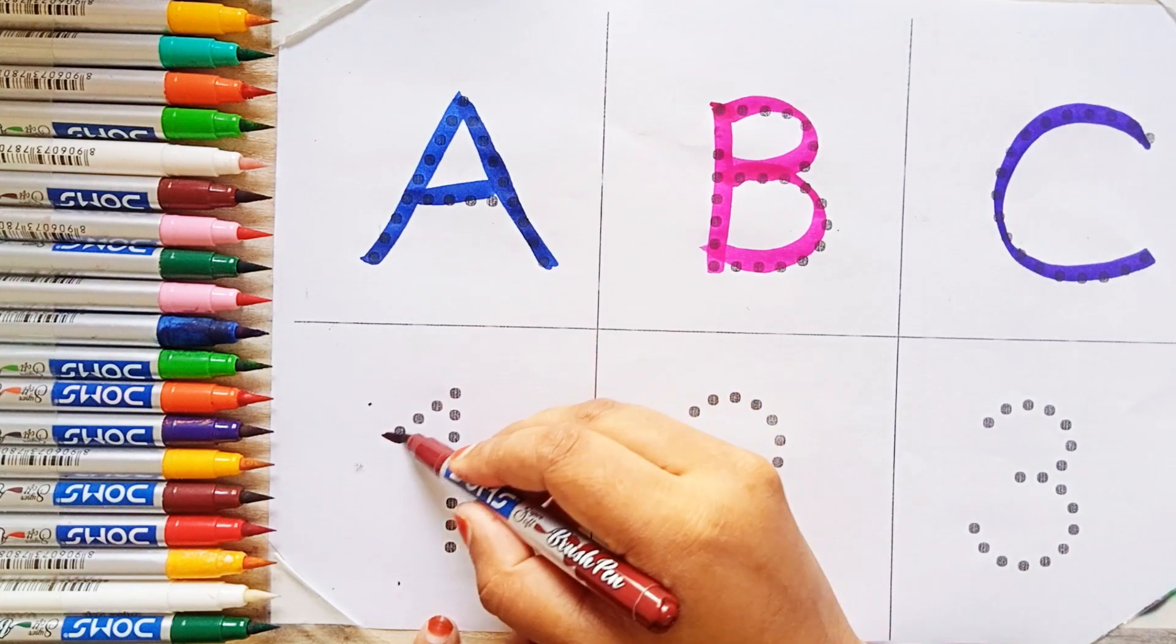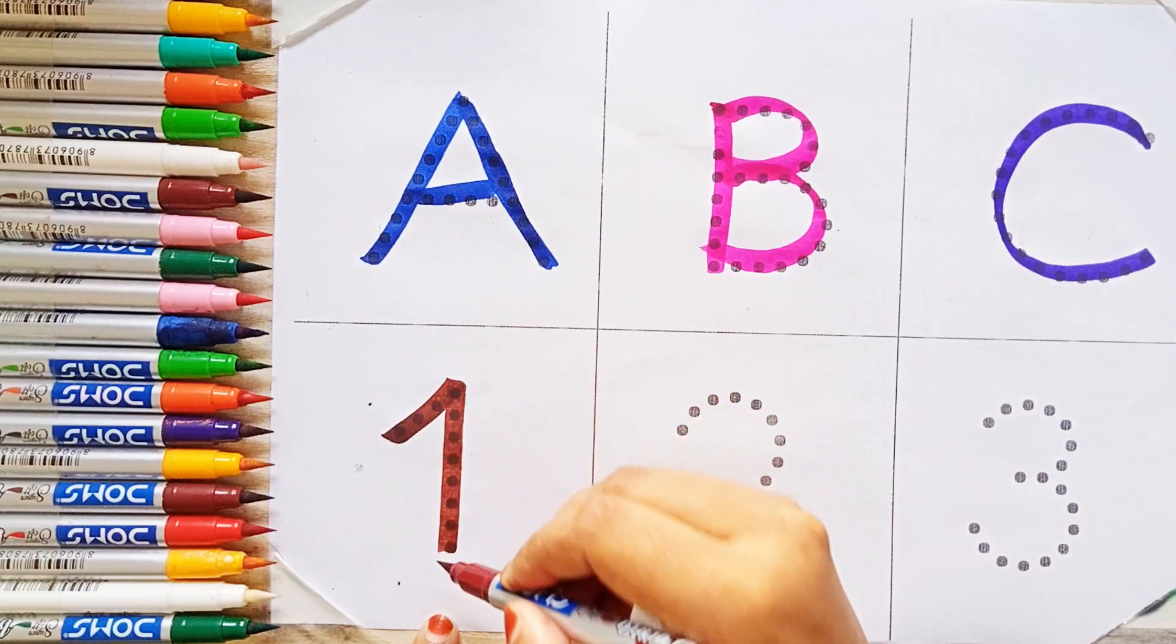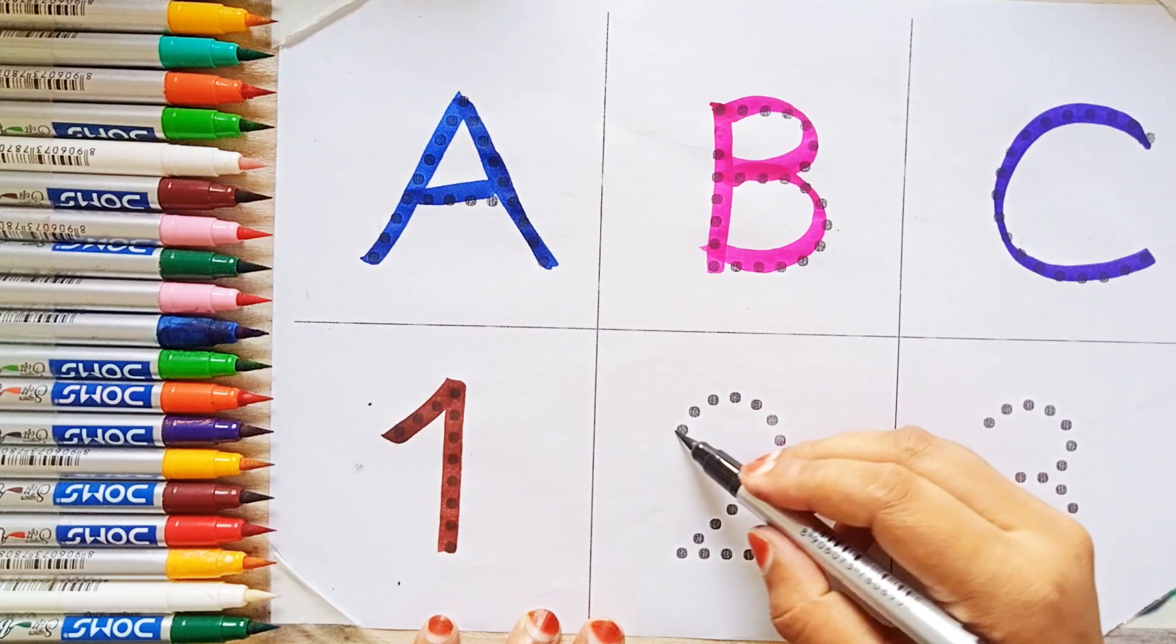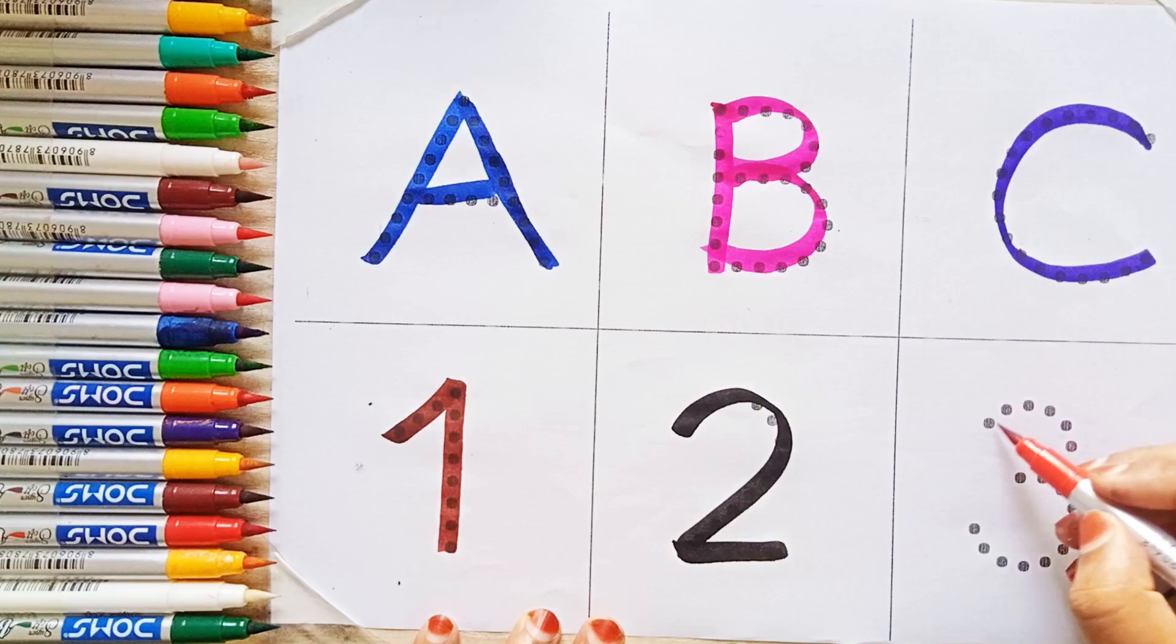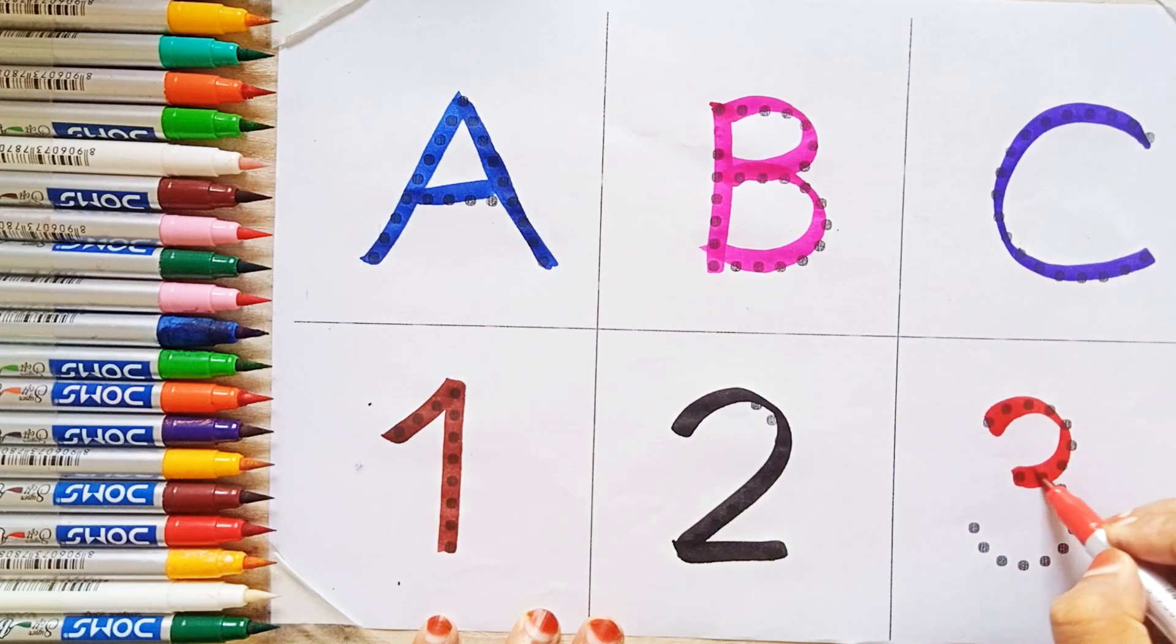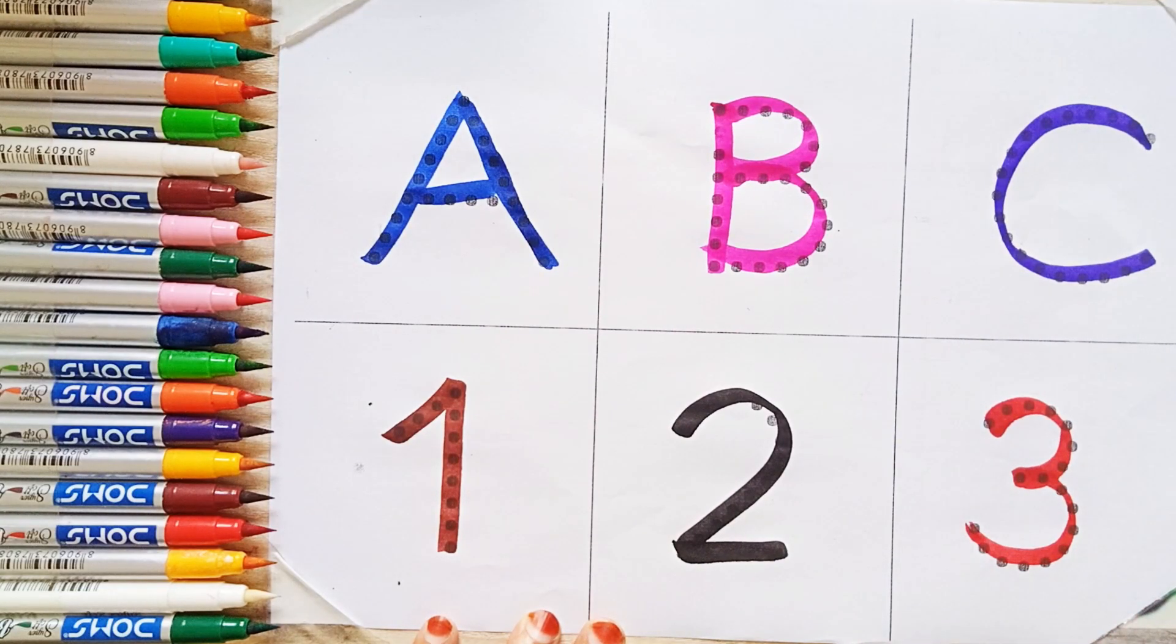Brown color, 1, one. Black color, 2, two. Red color, 3, three.